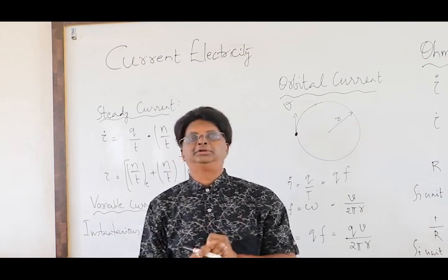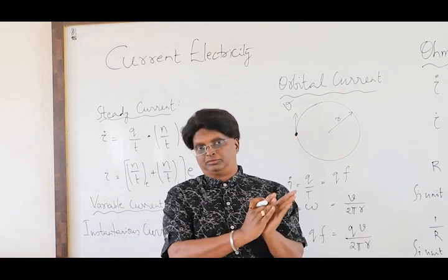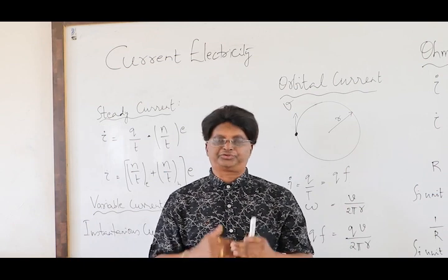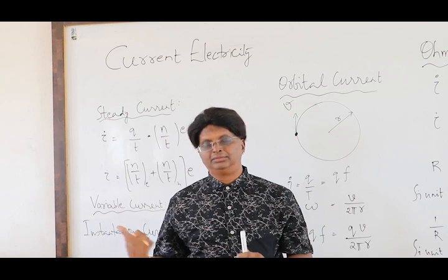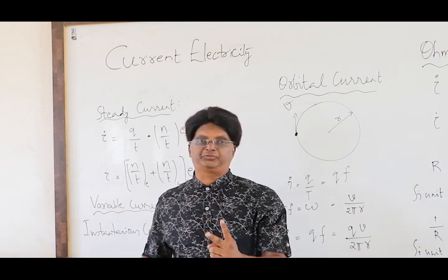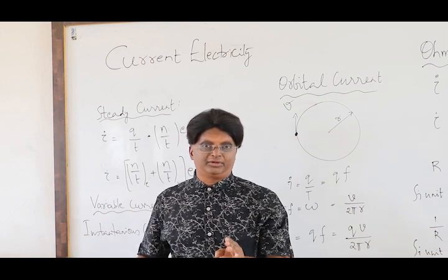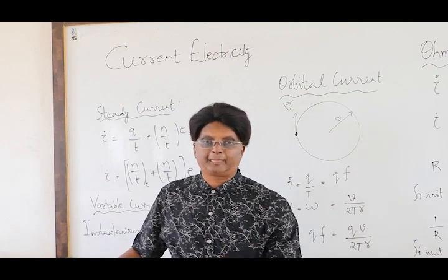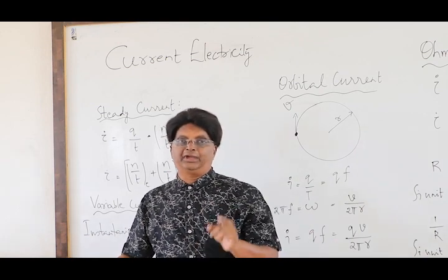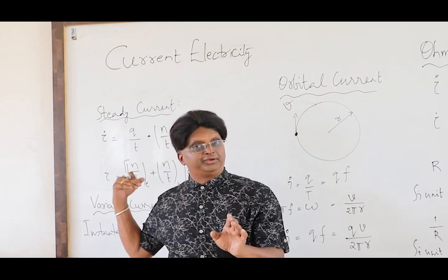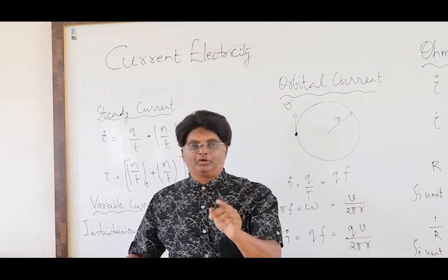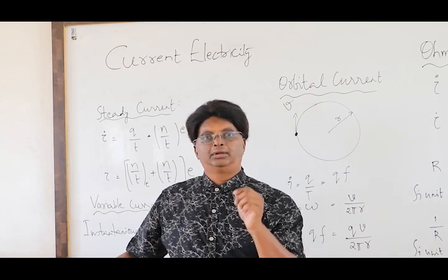Availability of free charge carriers is the first requirement. The second requirement is a potential difference — for the charges to flow, there should be a potential difference created. Negative charges always tend to flow from lower potential to higher potential; positive charges from higher potential to lower potential. We always define conventional current — that is the current due to the flow of positive charges — from higher potential to lower potential. We always represent conventional current in our discussions.